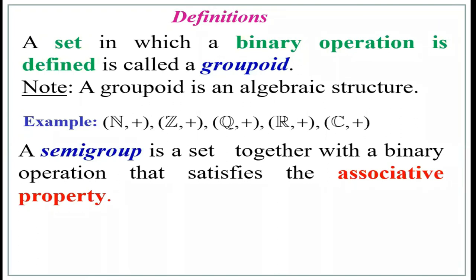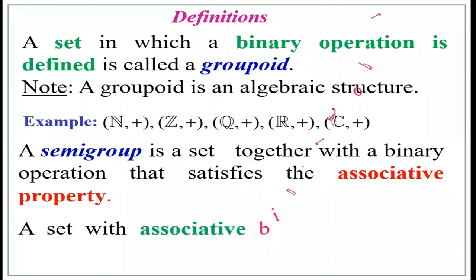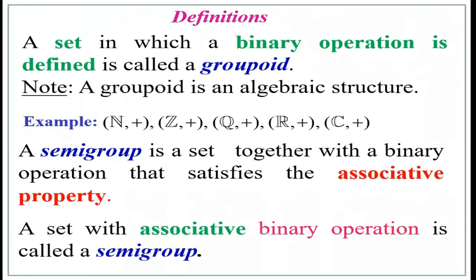While in the definition we don't explicitly mention closure, we do verify it when solving problems. A semi-group must satisfy two conditions: closure property and associative property. A set with an associative binary operation is called a semi-group.